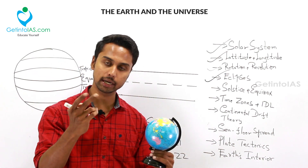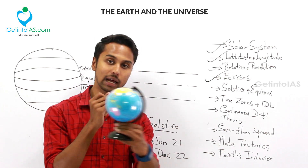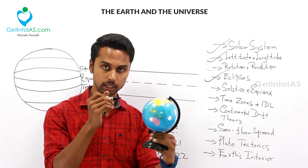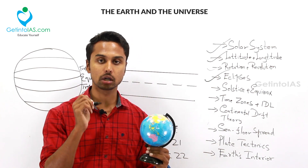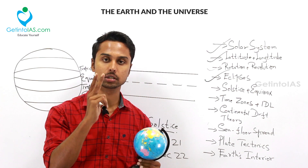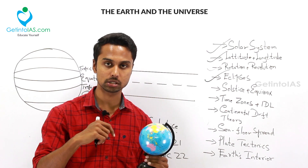Equinox happens twice in a year — we will check the dates later. Now we will see about the solstice. There are two solstices: northern solstice and southern solstice.